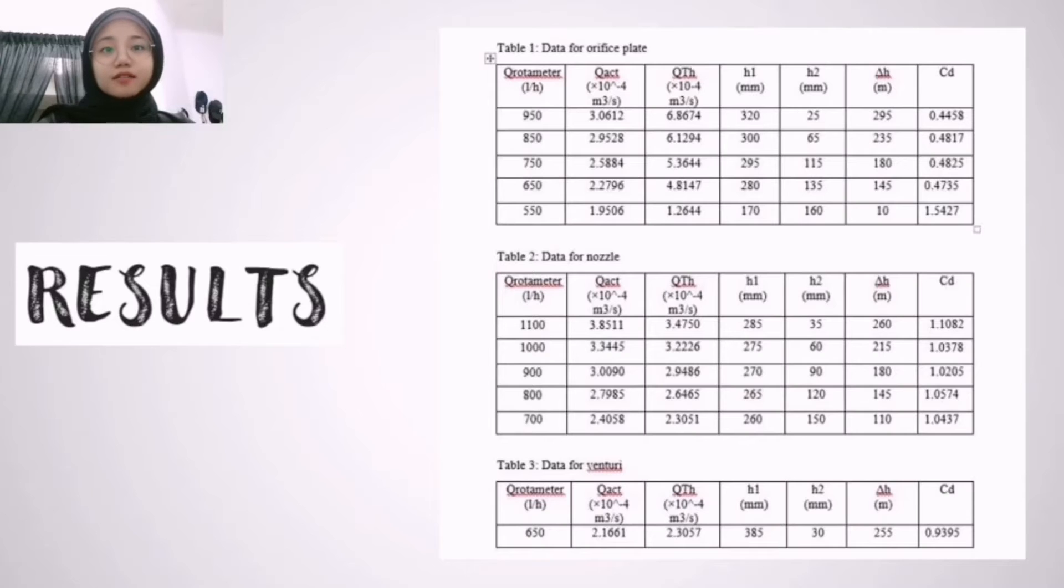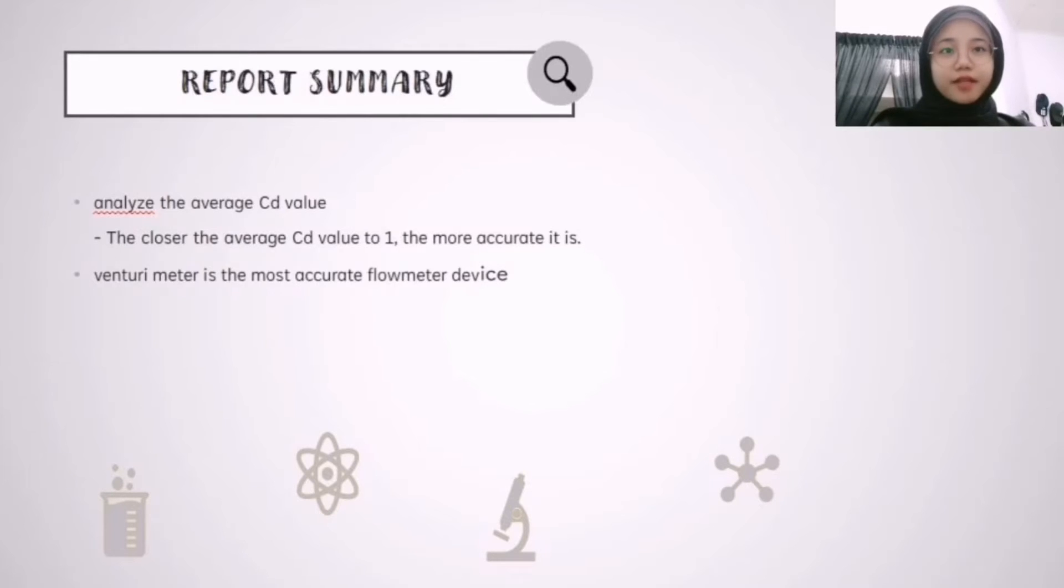Next, this is the result that we obtained from the experiment. From this experiment, it is found that venturi meter is the most accurate compared to the other two devices which are orifice plate and nozzle.